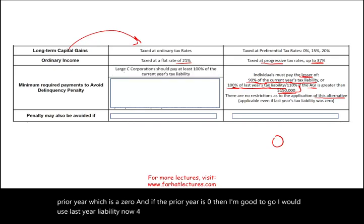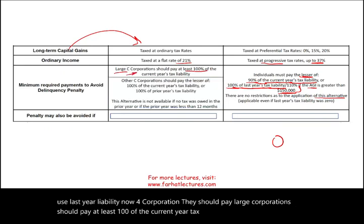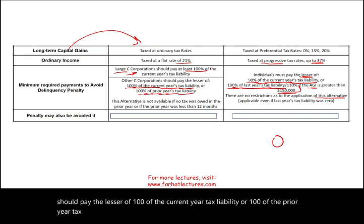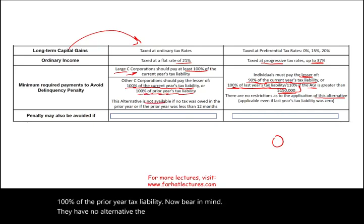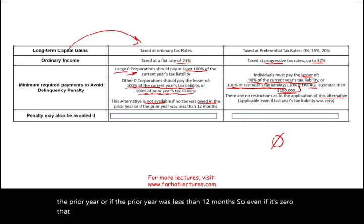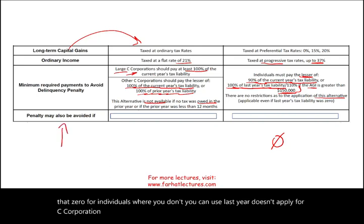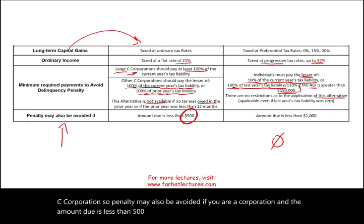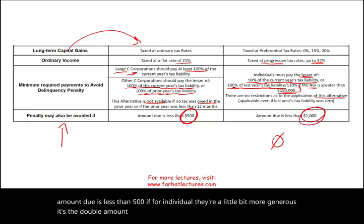For corporations, large corporations must pay at least 100% of the current year tax liability. Other C-corporations should pay the lesser of 100% of the current year or 100% of the prior year tax liability. However, the prior-year alternative is not available if no tax was owed in the prior year or if the prior year was less than 12 months. A penalty may also be avoided if the amount due is less than $500 for corporations, or less than $1,000 for individuals.